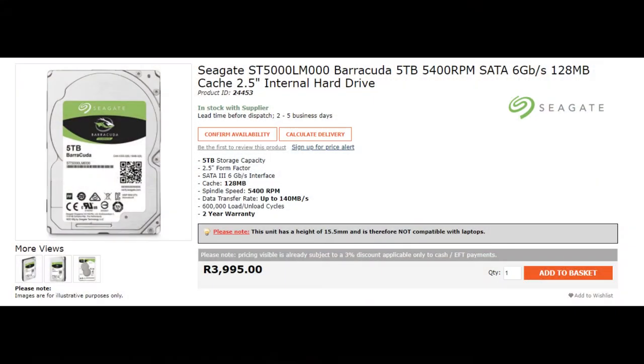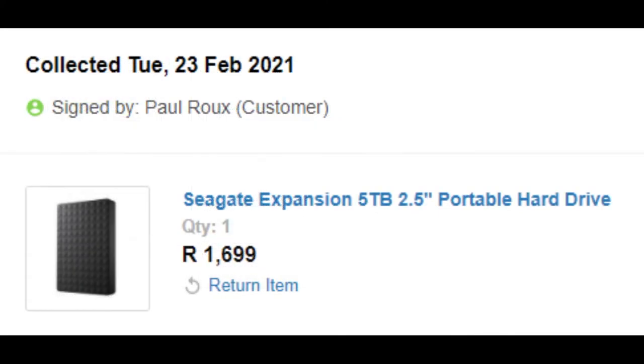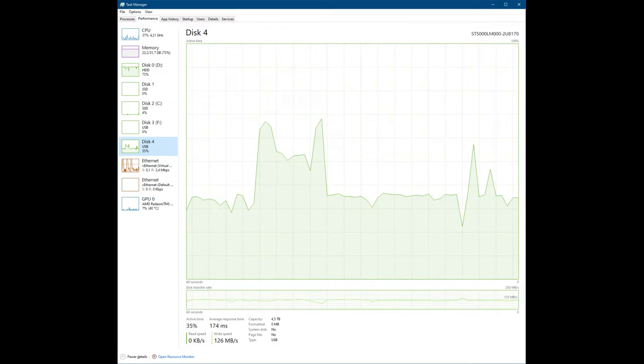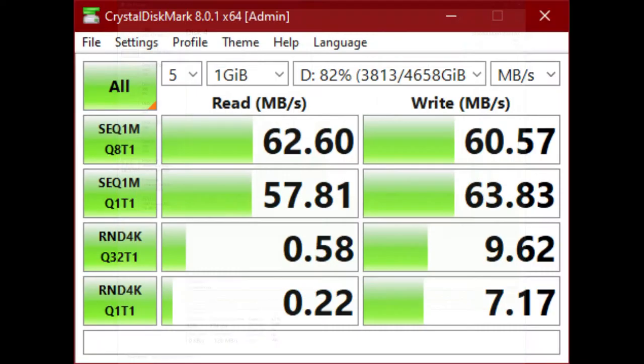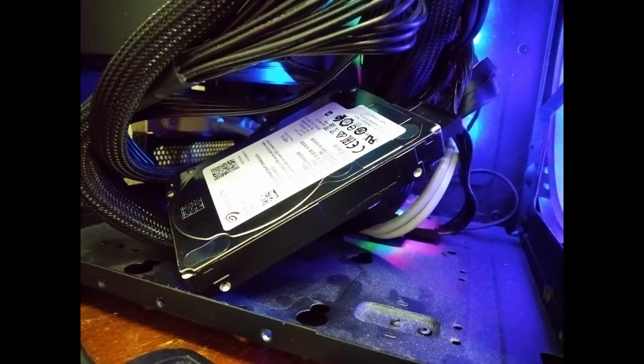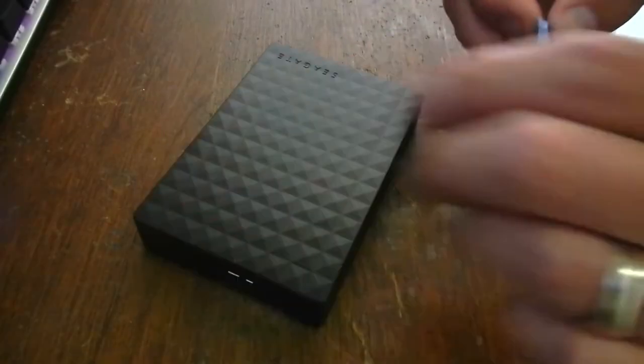As you see here, these normally sell for 4000 Rand, but the external ones are less than half of that. The speed you get with them is not too bad, not as fast as the internal ones. Well here's a real test so you can see. But in actual fact these external hard drives are just internal ones as you see there.